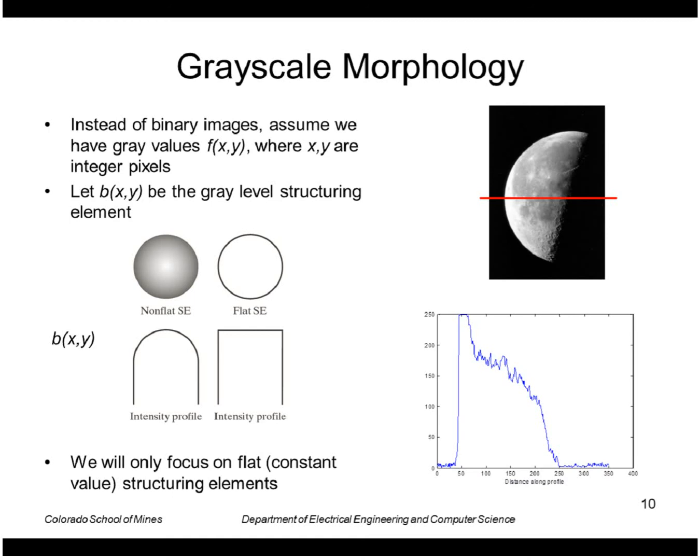Finally let's look at the extension of the morphological algorithms to grayscale images. We're going to assume that we have grayscale images like this where for example I've shown the profile through that horizontal slice as this curve here.